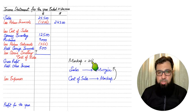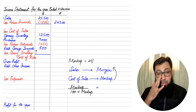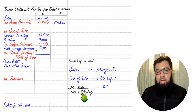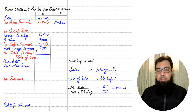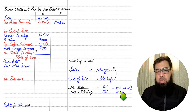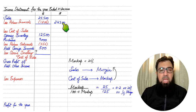When given markup in the question, it can be converted into margin using the formula: markup ÷ (100 + markup). With markup of 25%, we calculate 25 ÷ (100 + 25) = 25 ÷ 125 = 1/5 = 0.2, which equals 20%. So a markup of 25% converts to a margin of 20%. Conversely, if we insert margin into the reverse formula, we get markup.